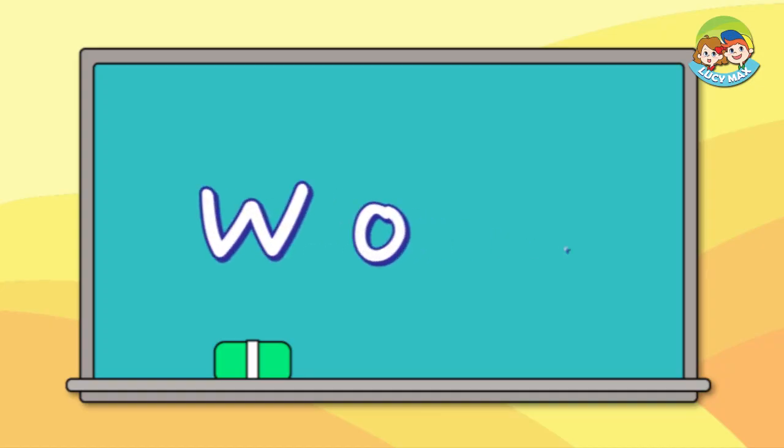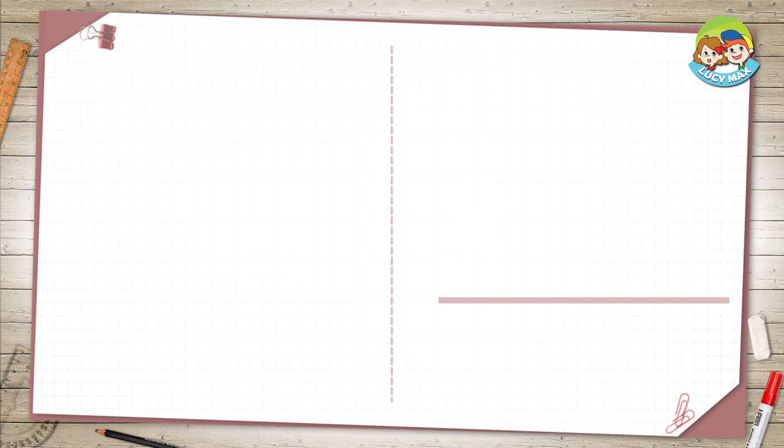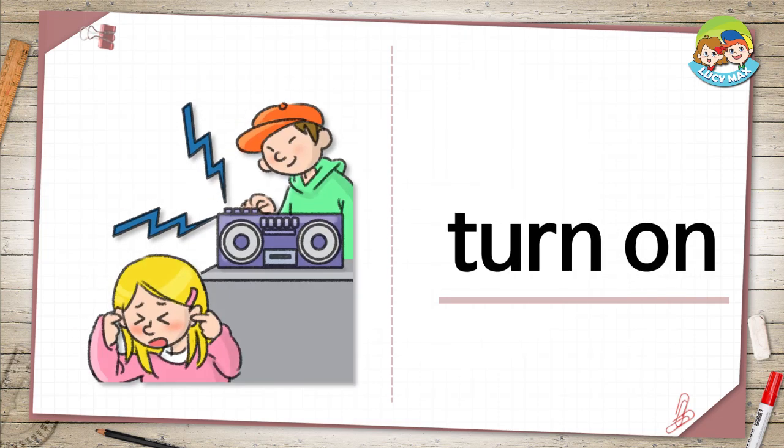First, let's learn some words using pictures, then we will take the word quiz. The boy turns on the radio — it means the boy makes the radio work. When he finishes, he turns it off. The girl doesn't like it when he turns on the radio because he turns it up loud.